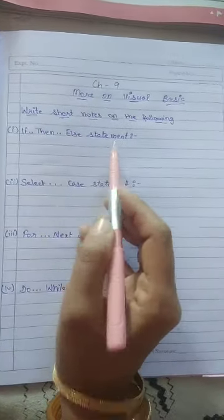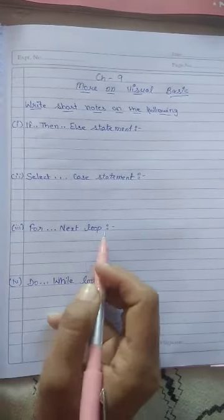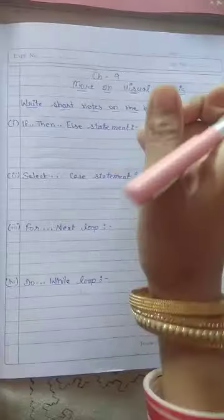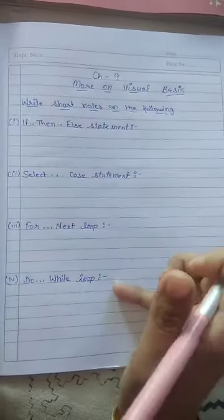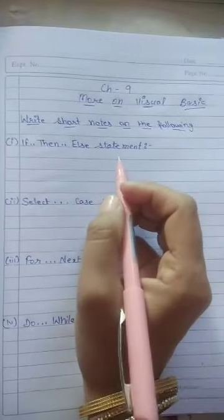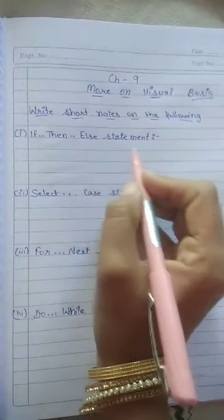Second is select case statement, third is for-next loop, and fourth is do-while loop. So we will write short notes on these four statements. First is if-then-else statement.